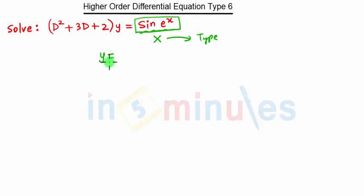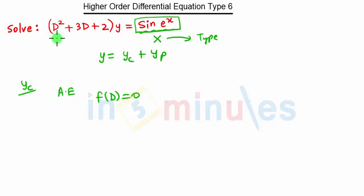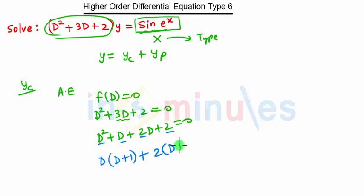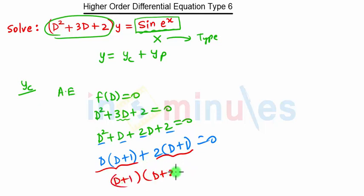The solution remains the same: y = yc + yp. First we will calculate yc, for that we need an auxiliary equation f(D) = 0, which is the operator part. Splitting the middle term: D² + D + 2D + 2 = 0. Taking D common from the first two terms gives D(D+1), and taking 2 common from the last two gives 2(D+1) = 0.